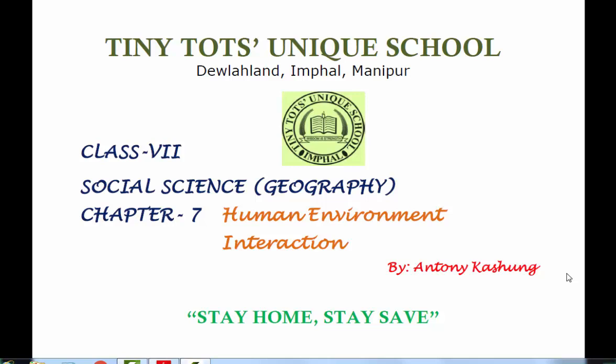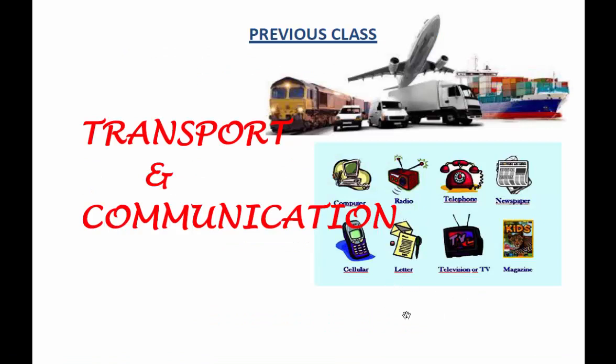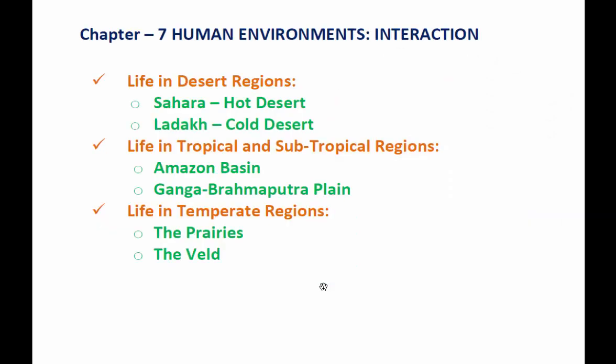Students of class 7, this is Sir Anthony Khashog, your social science teacher. Today we will learn a lesson from chapter 7, that is human environment or human interaction. In the previous class we learned about transport and communications — its usefulness, types of transport system, and communications. Today we will learn about human interaction, including life in desert regions, life in tropical and subtropical regions, and life in temperate regions.